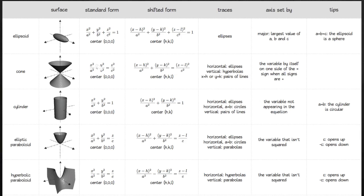Looking at this chart, I have a bunch of different quadric surfaces. In the first row is an ellipsoid, with a picture and the standard form when the center is at the origin, as well as the shifted form if the center is at some other point. In the standard form column, I'm looking for all three variables involved with one variable separate from the other two. For the ellipsoid, all three variables are on the same side — that doesn't match. For the cone, I have two variables on one side, one on the other, and they're all positive. That matches.